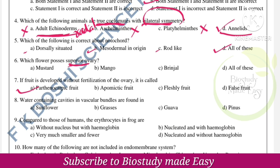Water-containing cavities are found in vascular bundles. The right option is option B — in grasses, that is usually monocots, where these are found.